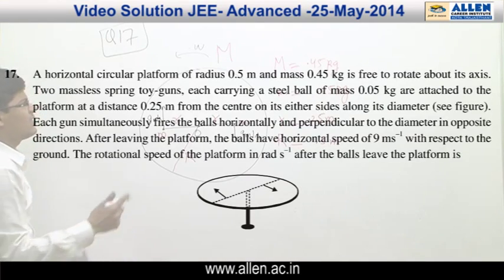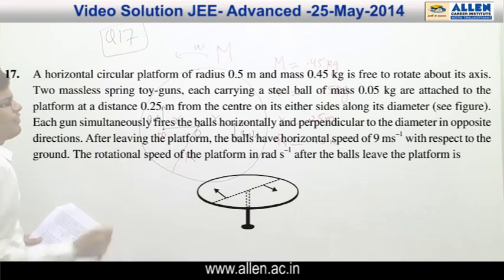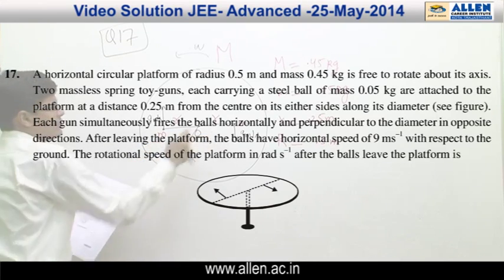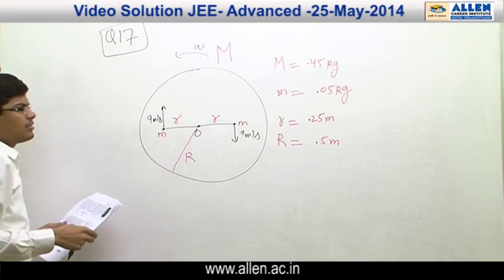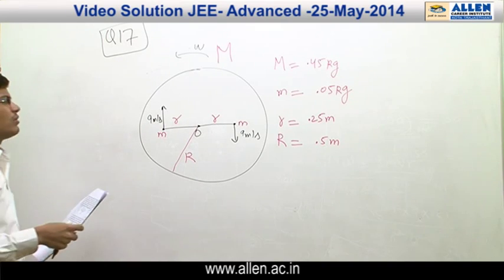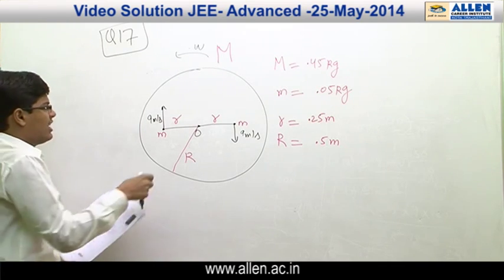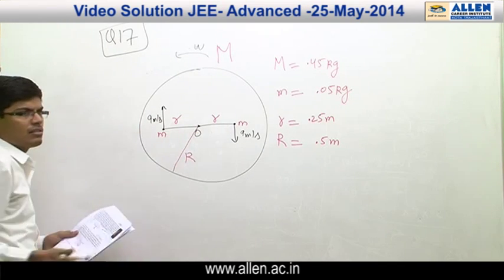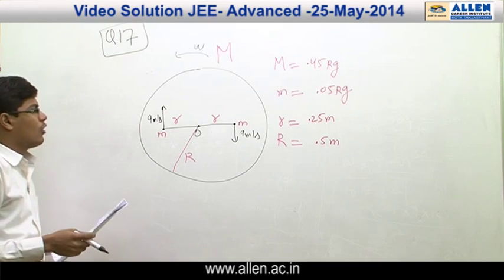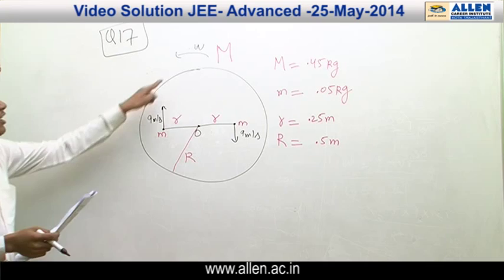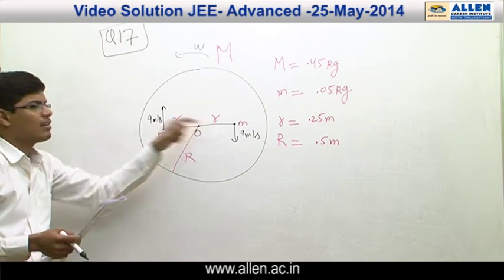Question number 17: There is a circular platform of radius R = 0.5 meter, with two guns situated at r = 0.25 meter from the center. Initially the whole system was at rest. Steel balls are fired from these two guns with a velocity of 9 meter per second in opposite directions. We need to find omega of the circular platform after firing.